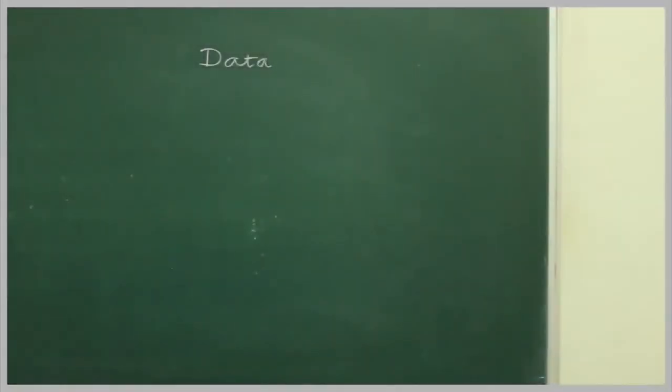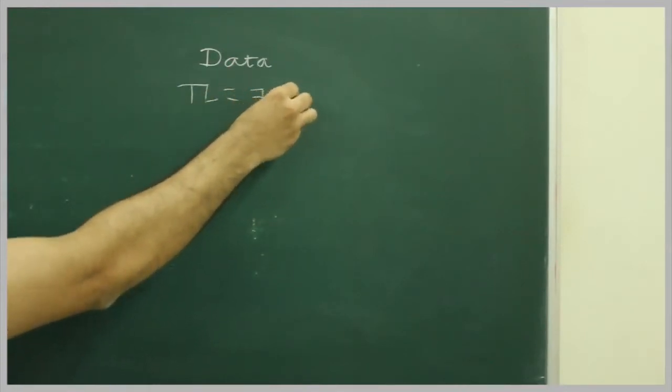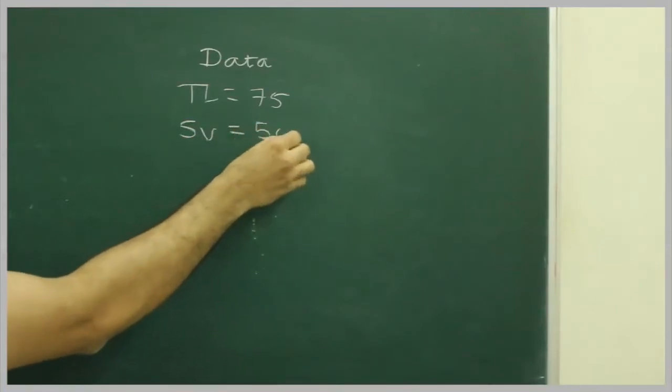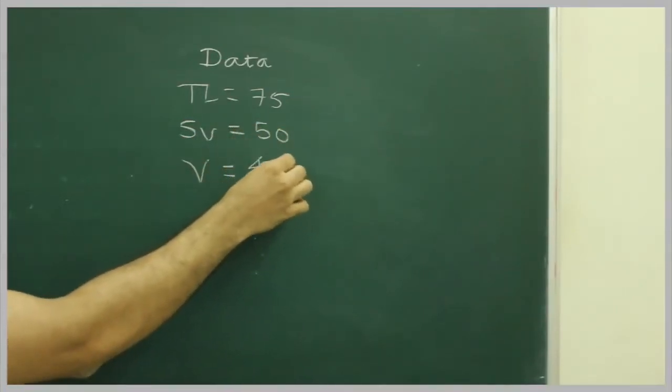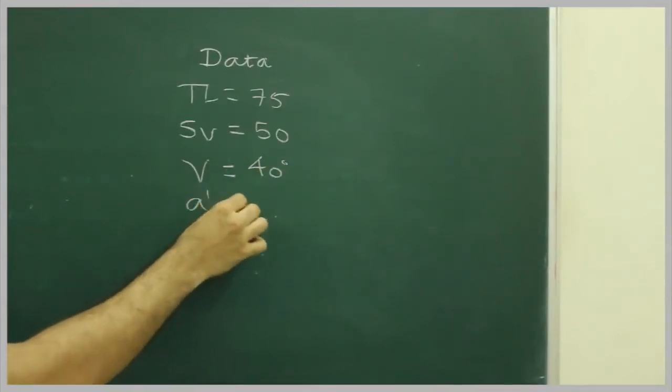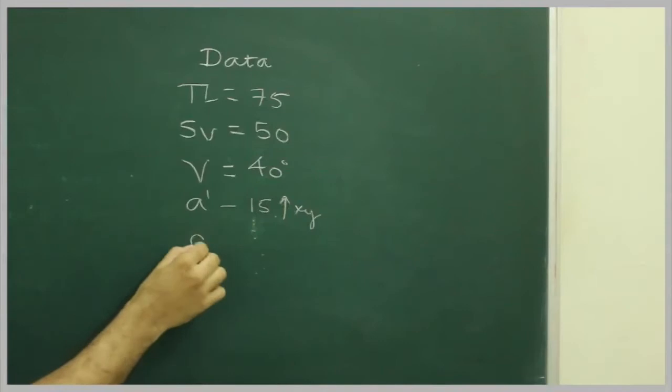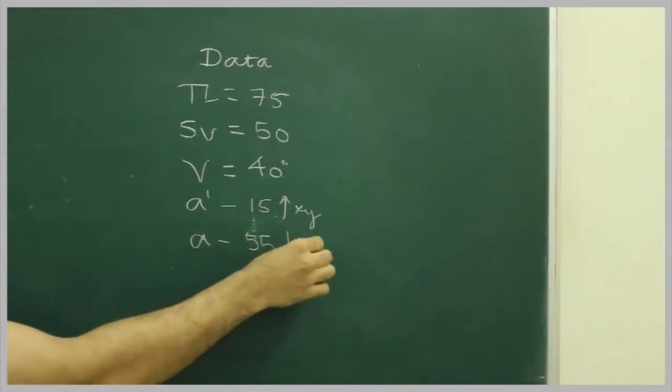So, first we will write data: true length 75 mm, side view 50, gamma that is 40 degree, A dash 15 mm above x value, and A 55 mm below x value.